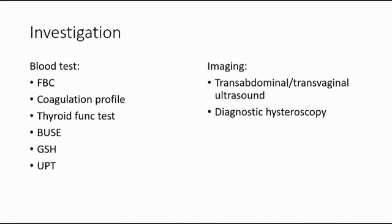We also do renal ultrasound to assess kidney function, as a large fibroid may compress the ureter which can lead to hydronephrosis and subsequent kidney damage. Group and Save is a preoperative preparation for blood transfusion in case of massive blood loss during operation. And also urine pregnancy test to exclude pregnancy.